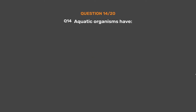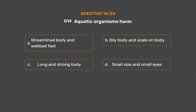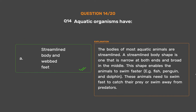Question 14. Aquatic organisms have: Option A: Streamlined body and webbed feet. Option B: Oily body and scales on body. Option C: Long and strong body. Option D: Small size and small eyes. The correct answer is Option A: streamlined body and webbed feet. The bodies of most aquatic animals are streamlined — narrow at both ends and broad in the middle. This shape enables animals to swim faster, for example fish, penguin, and dolphin, which need to swim fast to catch prey or escape predators.